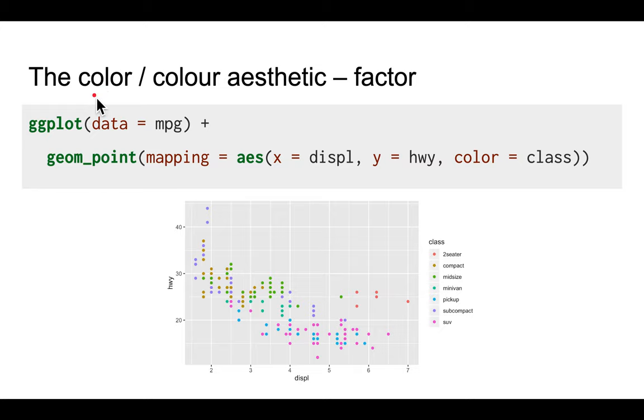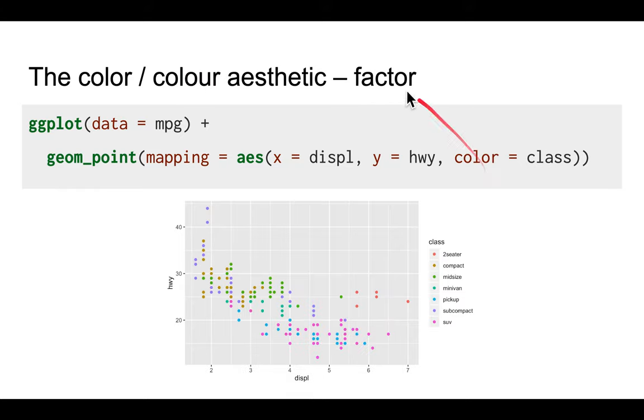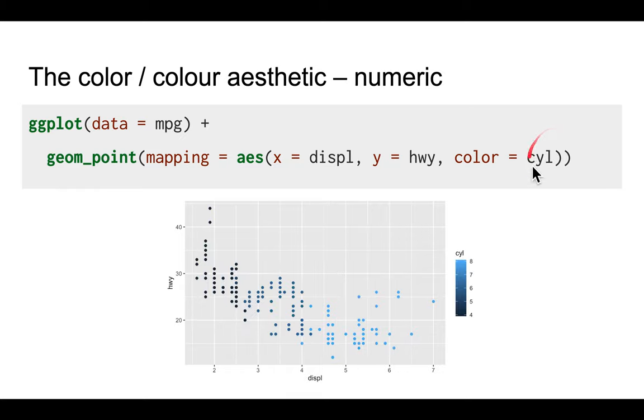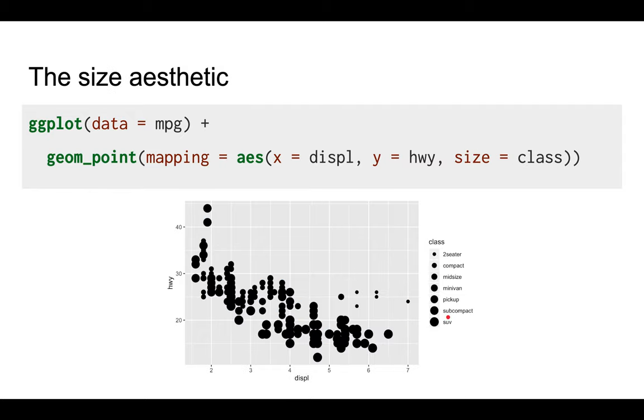ggplot is quite open - it accepts both US and UK spellings of the word color, so whether you use OR or OUR you'll be fine. You can also assign colors based on numeric variables. The previous plot shows what it looks like if the variable you give is a factor, but if you give a numeric or integer variable, you'll get a color bar instead of discrete points.